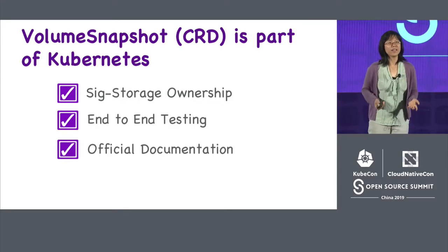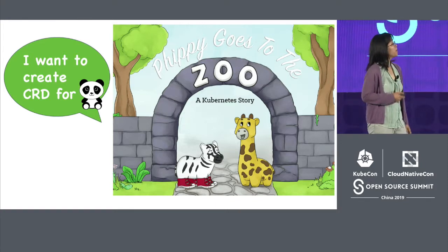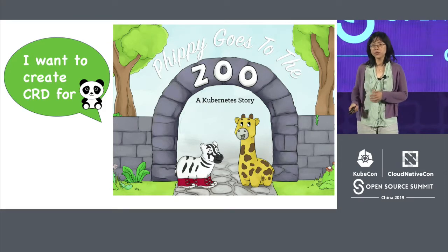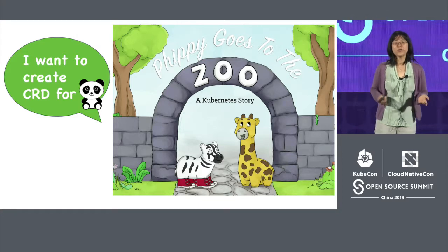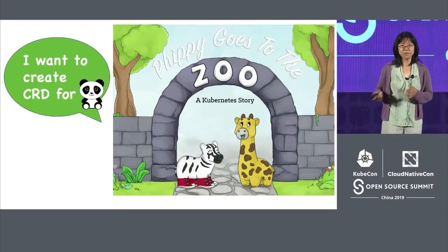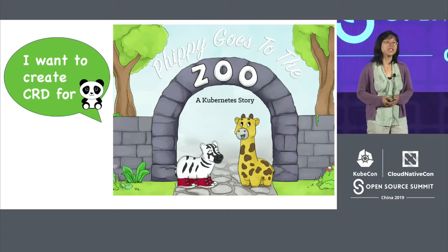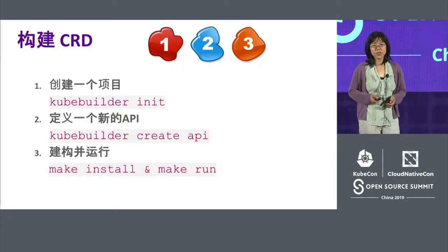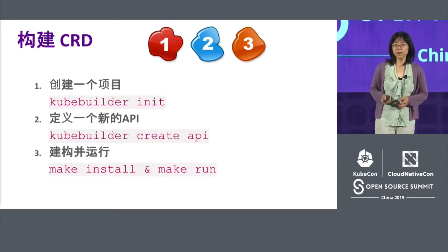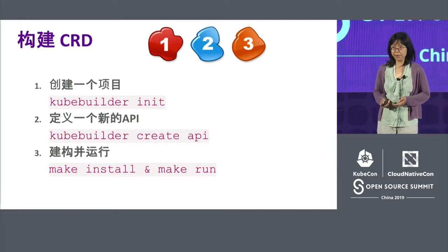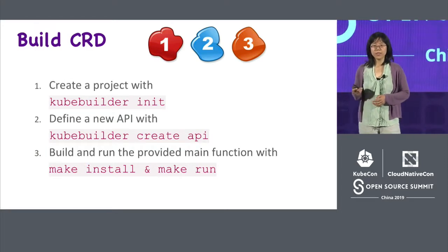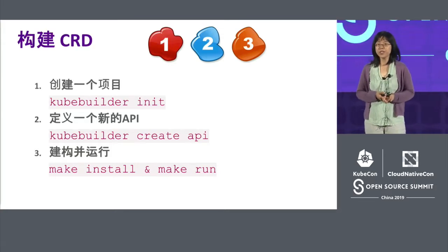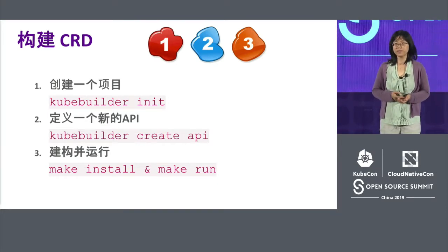Now you're probably interested in CRD and want to try it yourself. How about building a CRD for a cute panda and creating a controller to monitor it? Is it easy? To tell the truth, if you do it manually from scratch, you have to go through a lot of steps and understand the code structure very well. The good news is we have excellent tools to help us. For example, Kubebuilder — one of the most commonly used tools to help you create and publish CRD APIs and build controllers. With these simple three steps, you can create a project, define a new CRD API, and build and run your controller. That's easy.